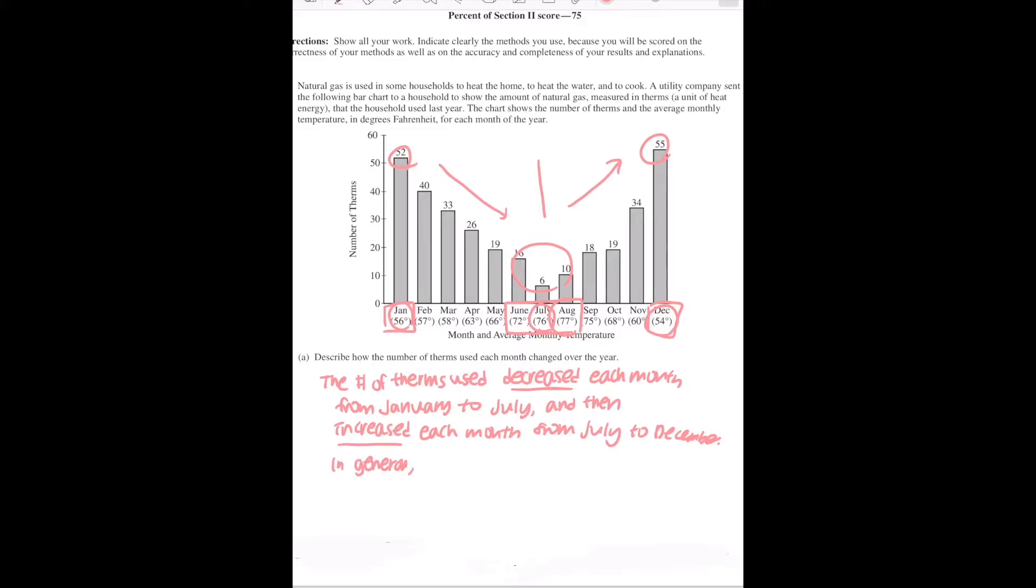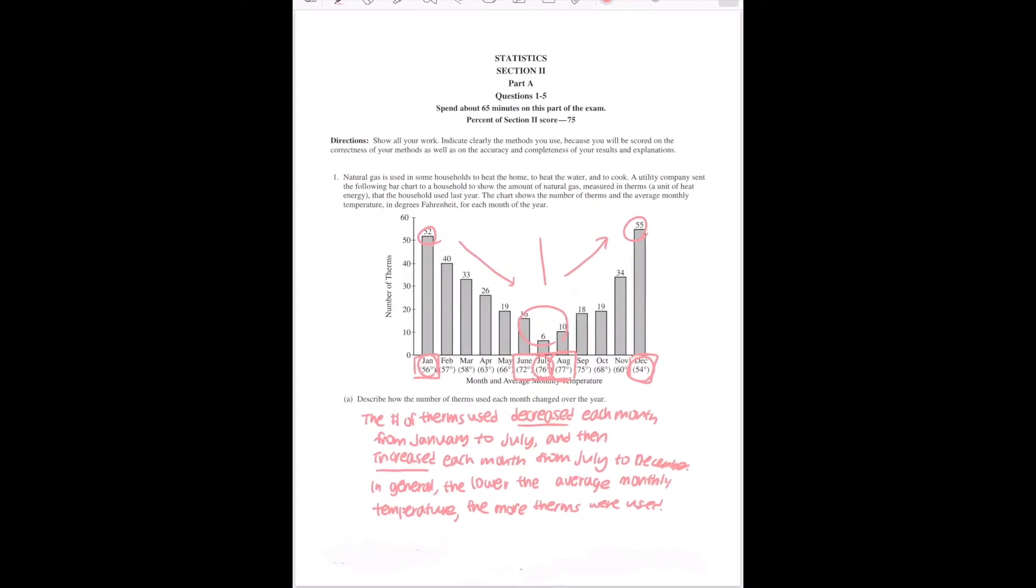You will say, in general, the lower the average monthly temperature, the more therms were used. And this will be your answer.